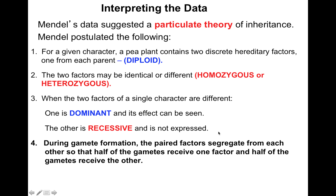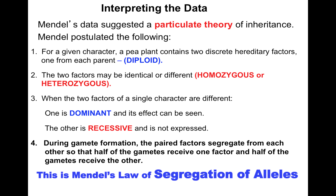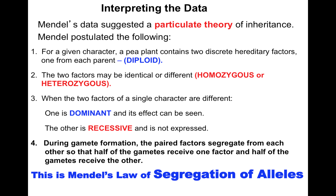Next, during gamete formation — the production of sperm and eggs — the paired factors segregate from each other so that half of the gametes receive one factor and half of the gametes receive the other. This is Mendel's law of segregation of alleles.